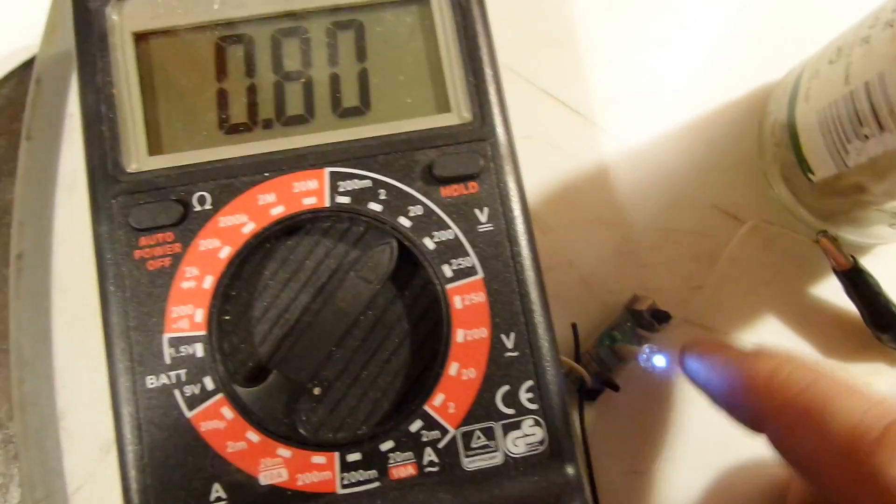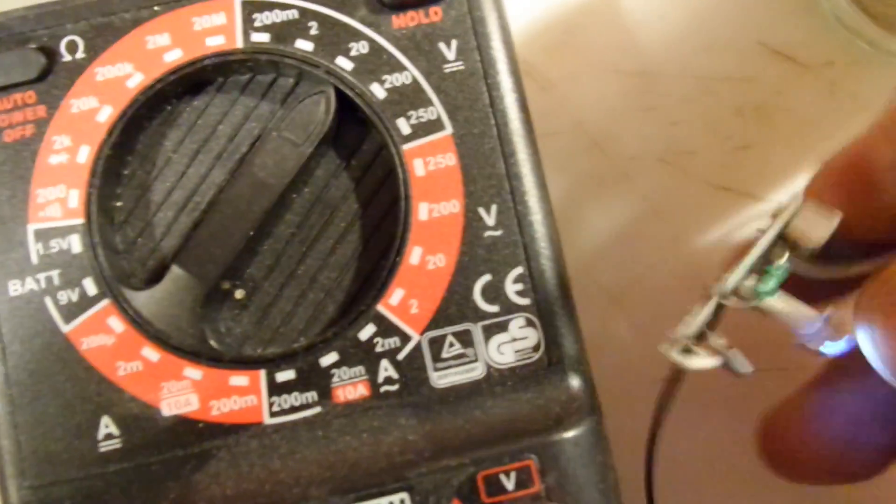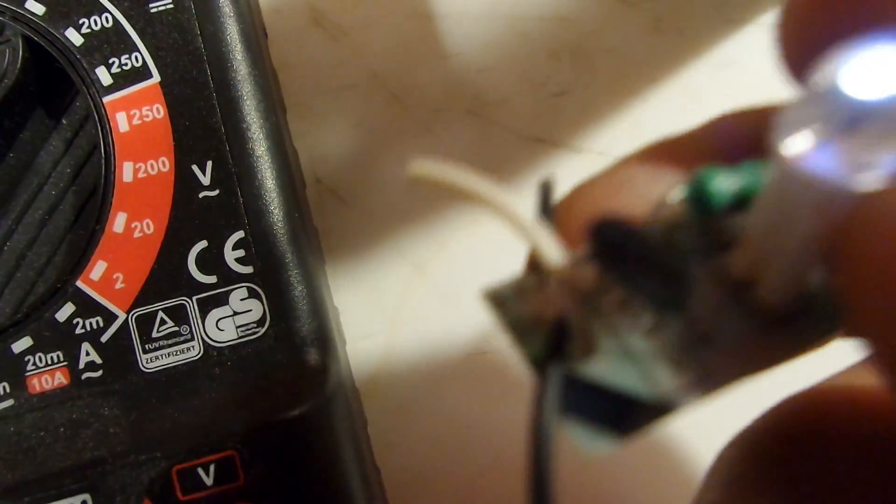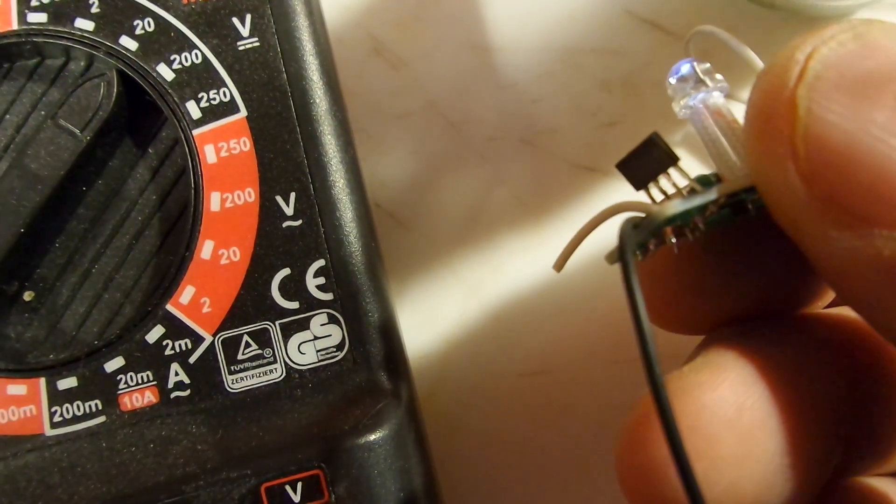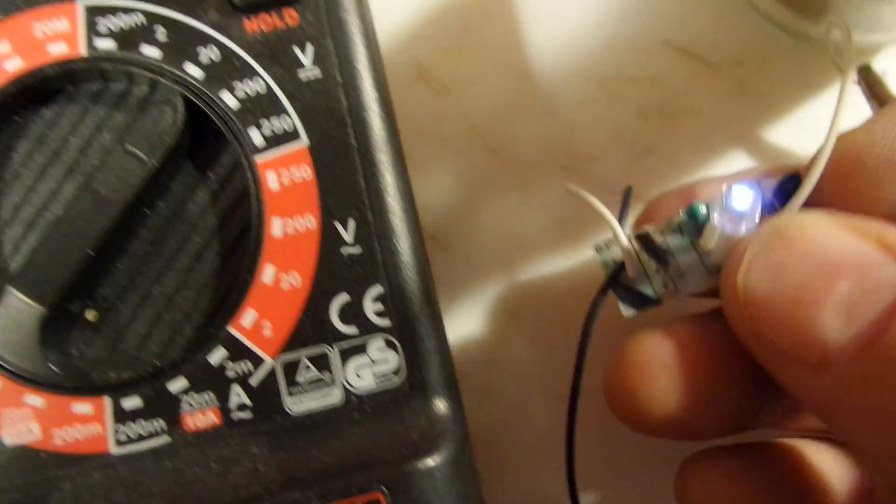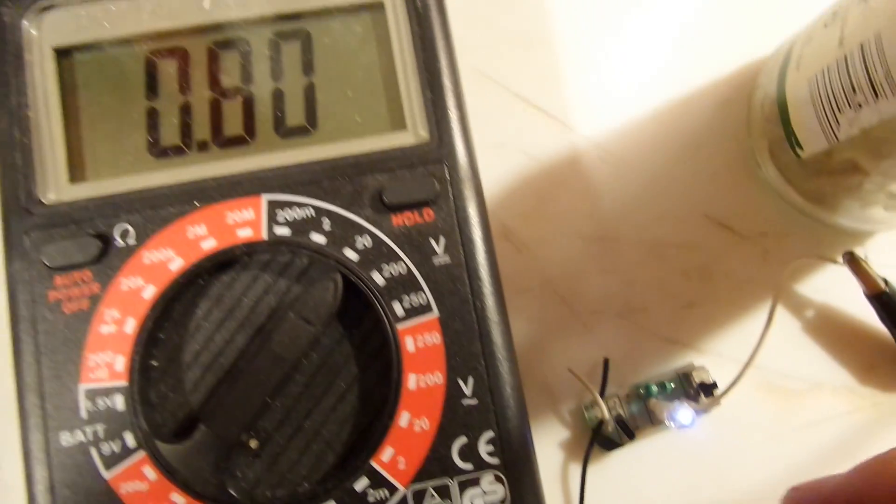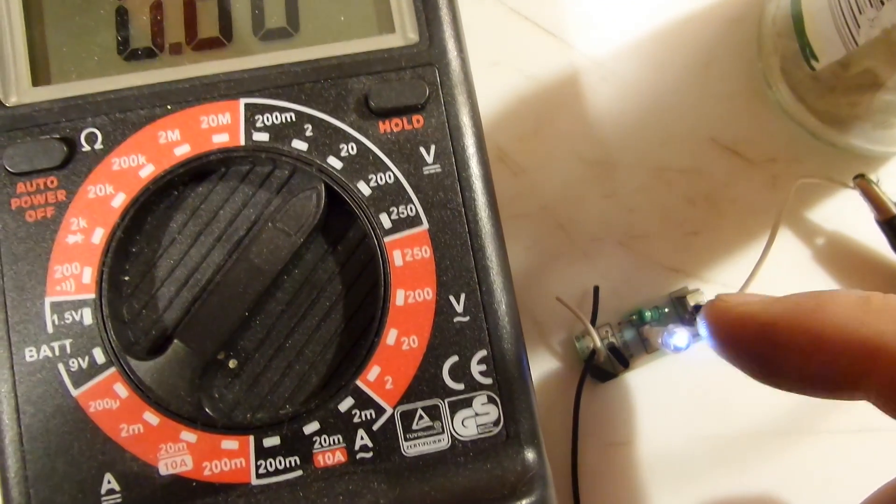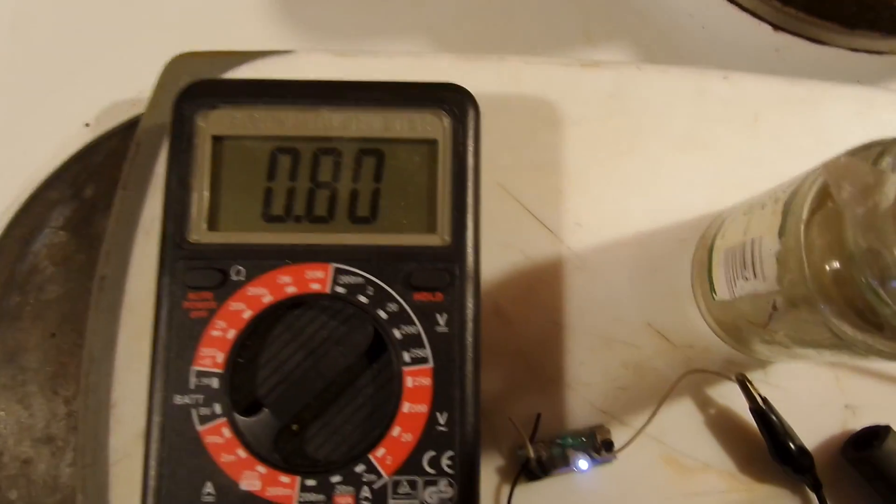These garden LED lights in my case have one single IC here with four legs that starts at about 0.65 volts. Then this LED begins to light up.